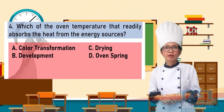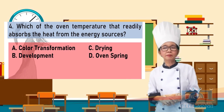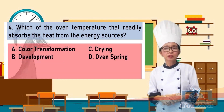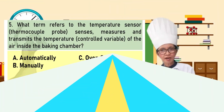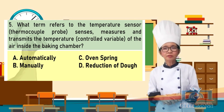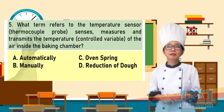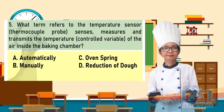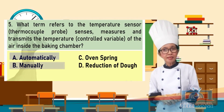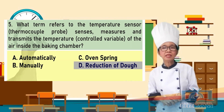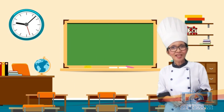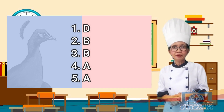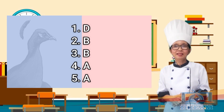Number 4: Which oven temperature stage readily absorbs the heat from the energy sources? A. Color transformation, B. Development, C. Drying, D. Oven spring. Number 5: What term refers to the temperature sensor that senses, measures, and transmits the temperature of the air inside the baking chamber? A. Automatically, B. Manually, C. Oven spring, D. Reduction of dough. Let's check your answers: Number 1 — D, Number 2 — B, Number 3 — B, Number 4 — A, Number 5 — A.